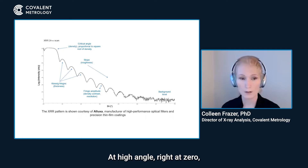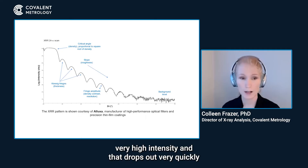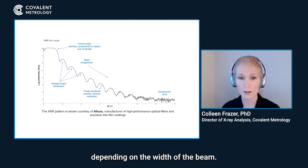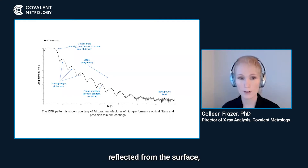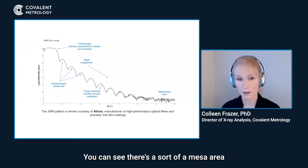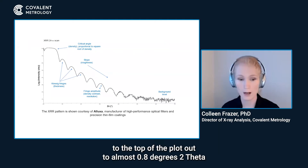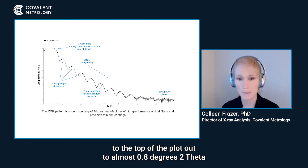At high angle, right at zero, we're looking at part of the direct beam — very high intensity, and it drops out very quickly depending on the width of the beam. As the x-ray beam is completely externally reflected from the surface, you can see there's a sort of a MESA area at the top of the plot, out to almost 0.8 degrees 2-theta.